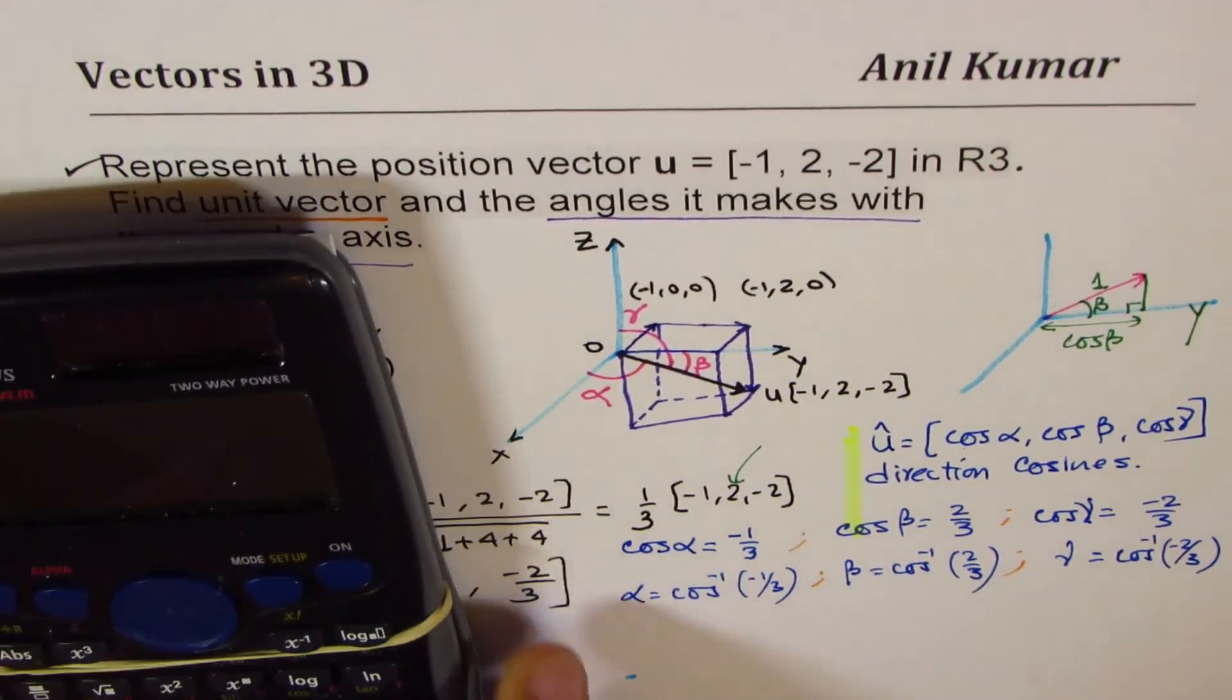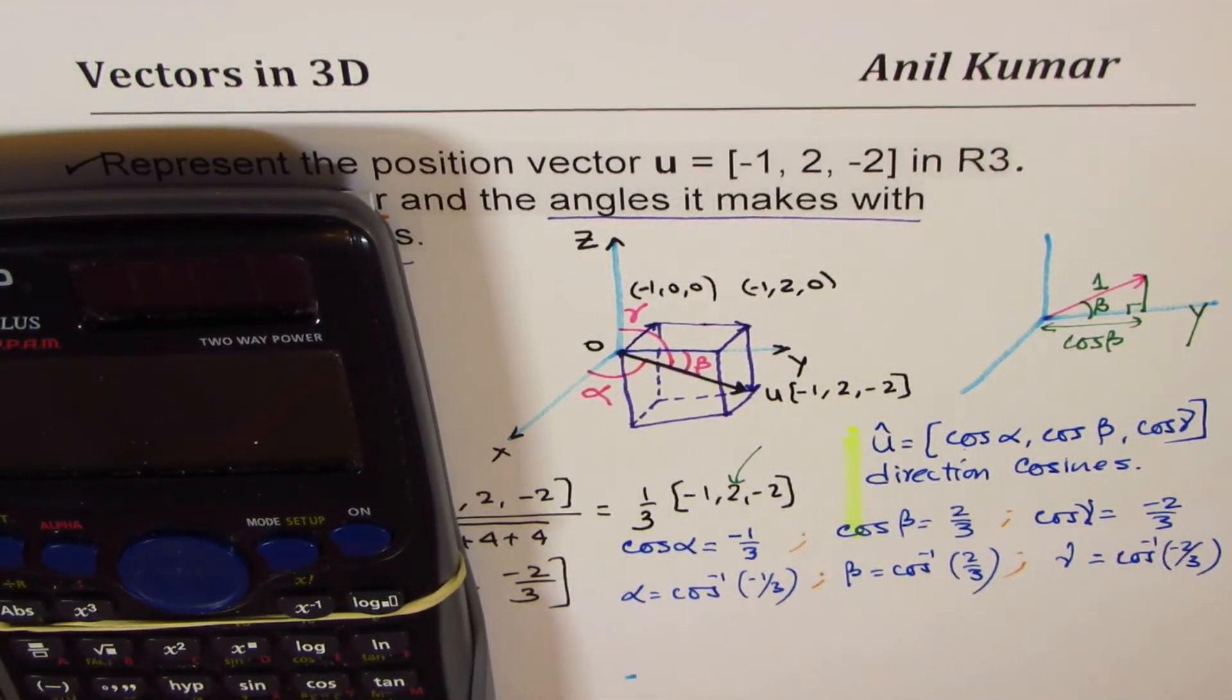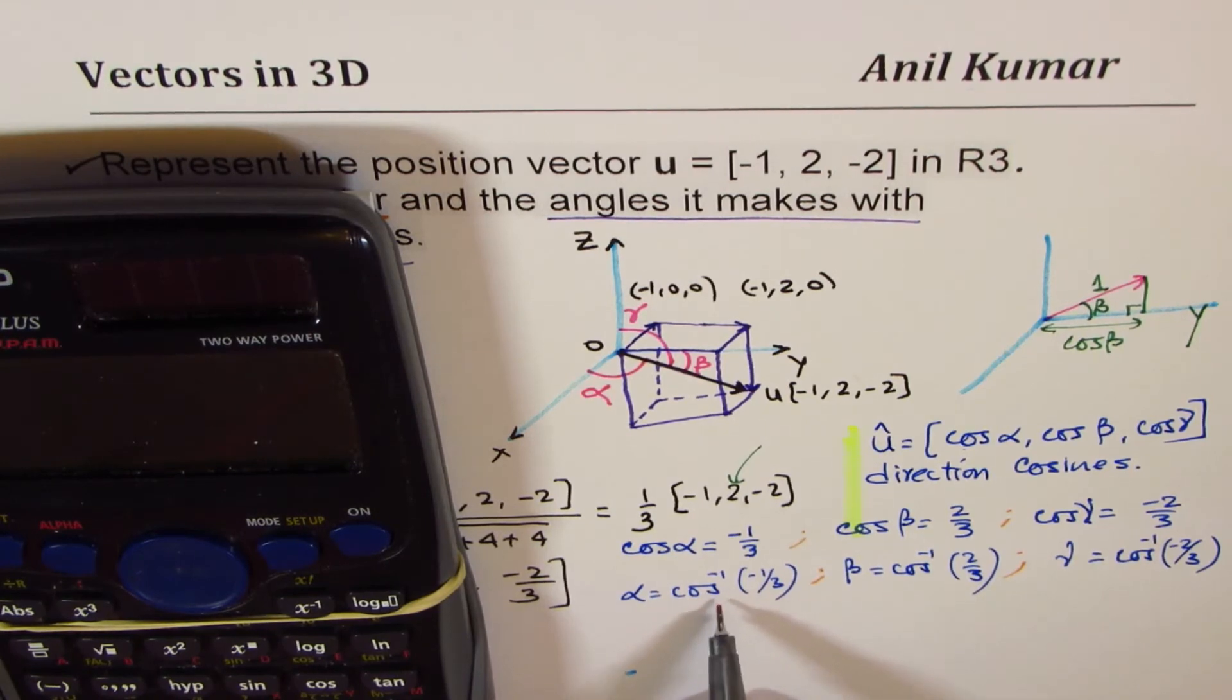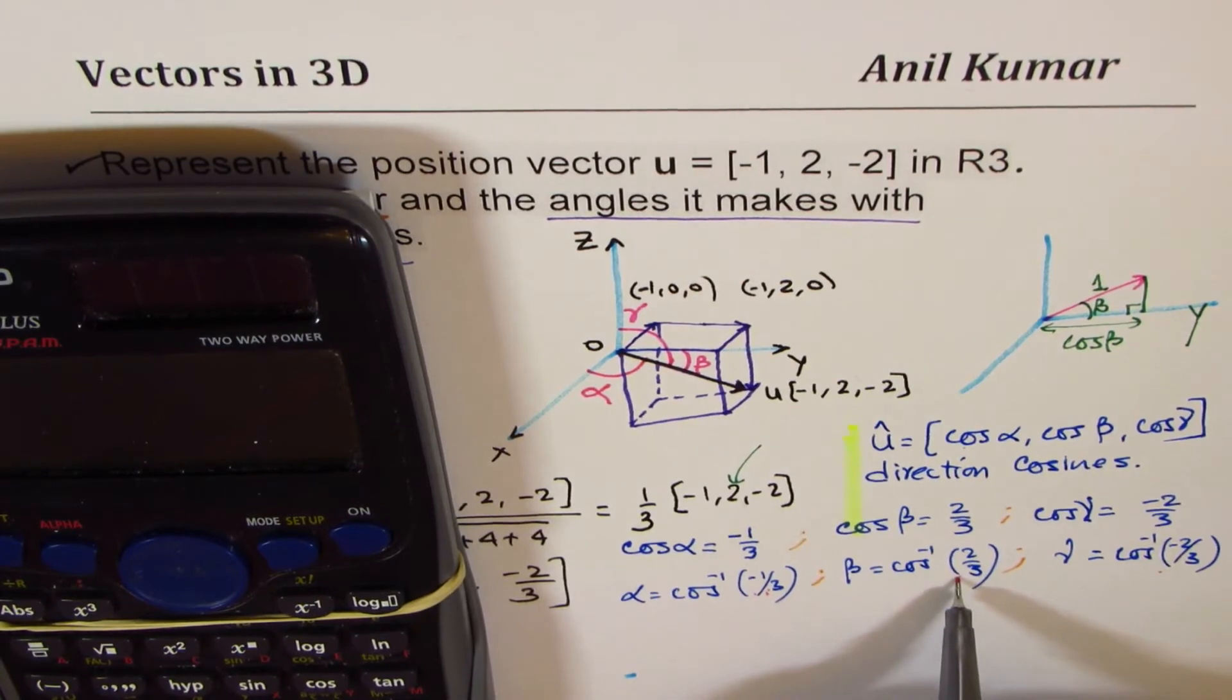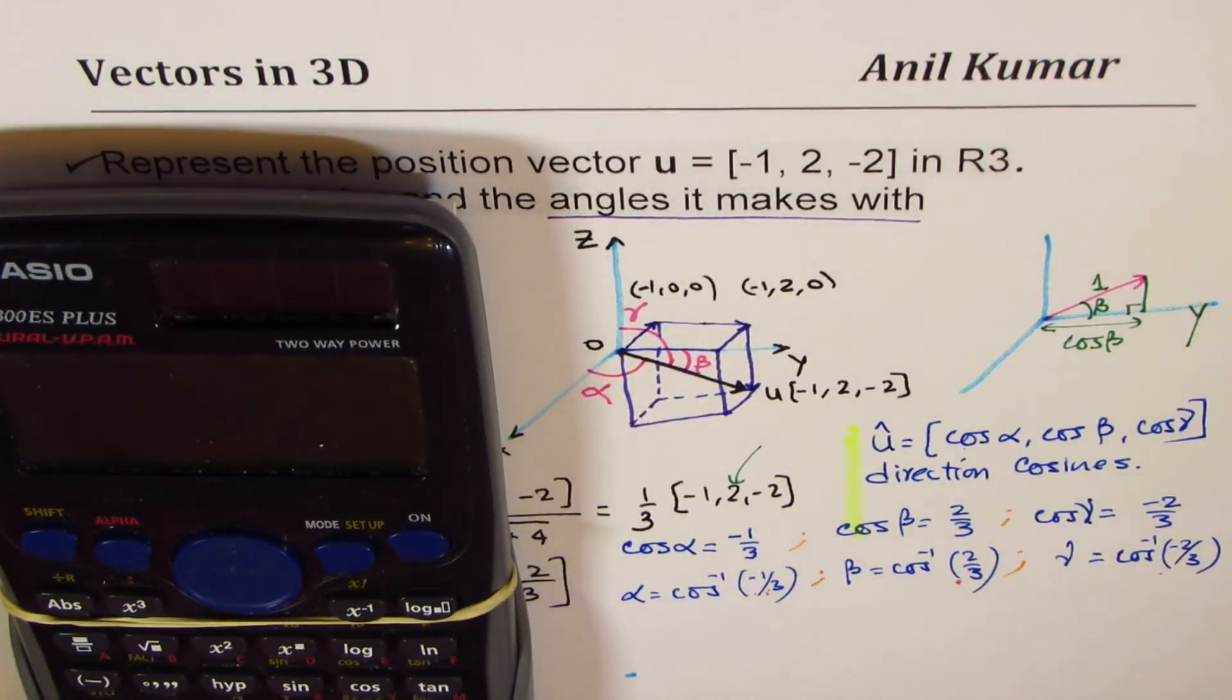Let's use the calculator to figure it out. Minus basically means you are in quadrant 2. So we expect obtuse angles for these two, acute angles here. Perfect.